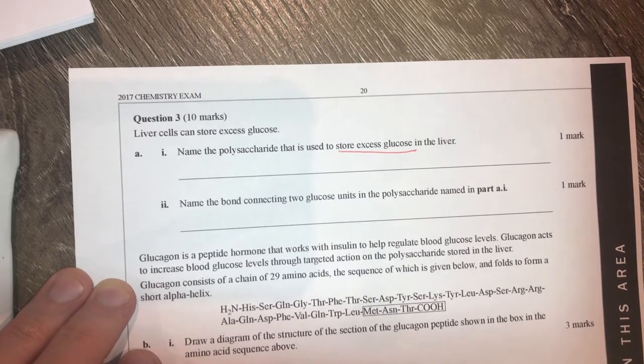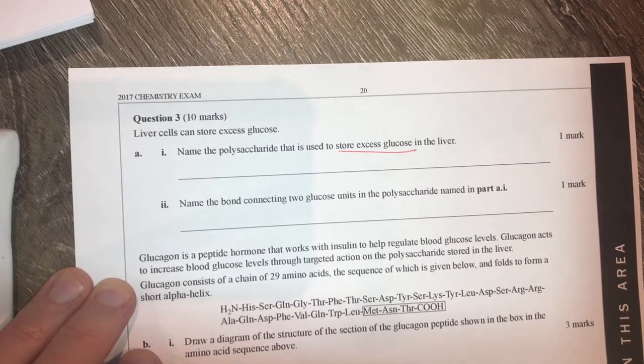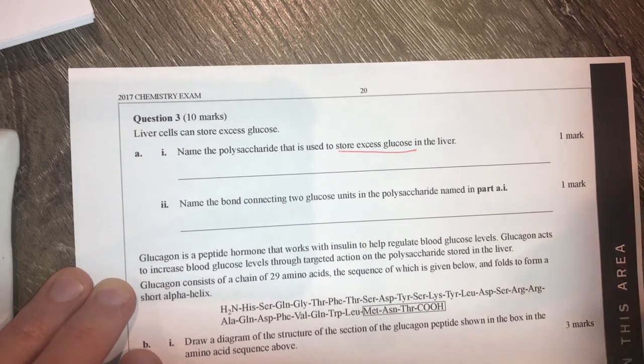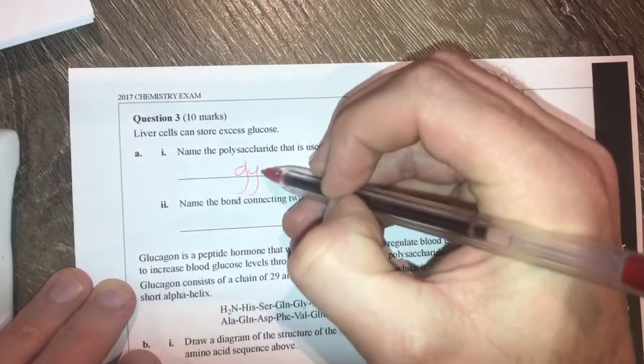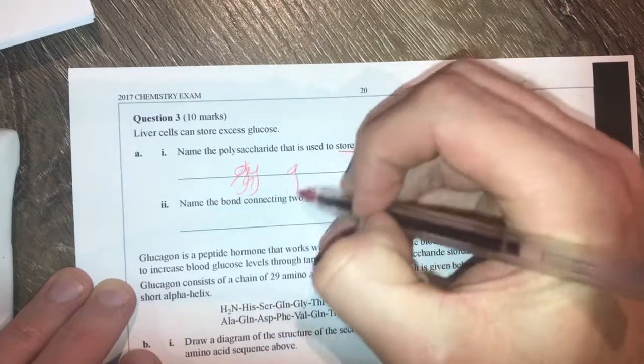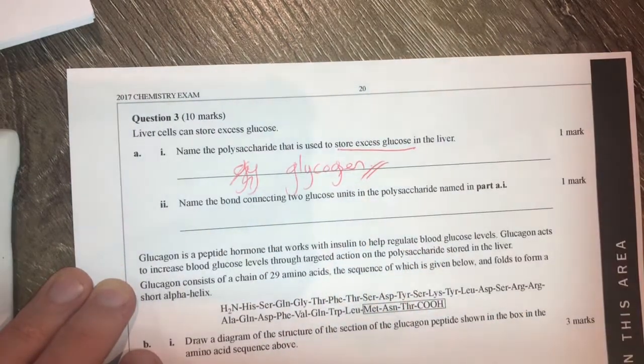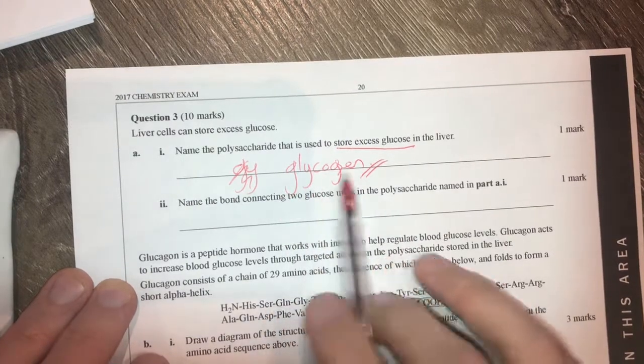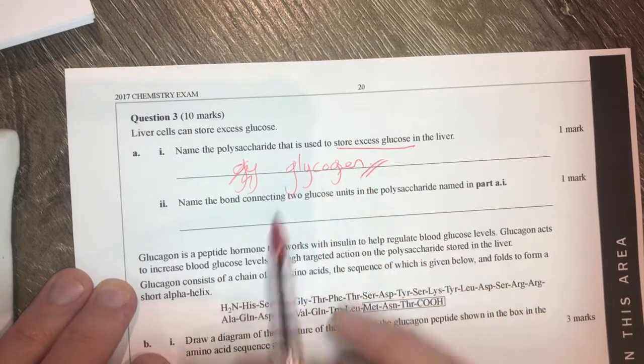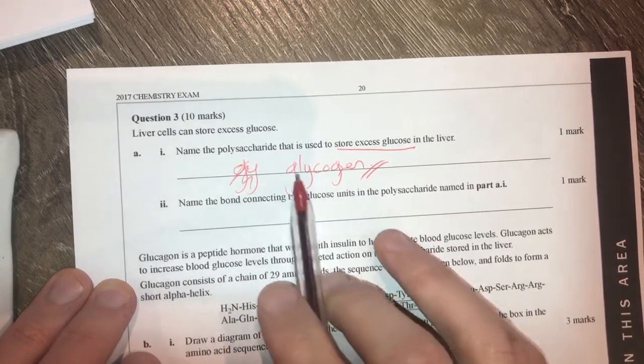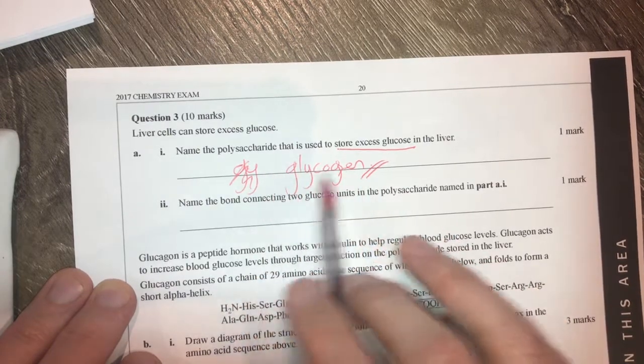So what we're going to do is say this is an animal because it's a liver cell, so therefore let's go and write glycogen for our answer. Important with spelling for some of these things, like molecules need to have the right spelling, so nice to know what some of these spellings are for glycogen.